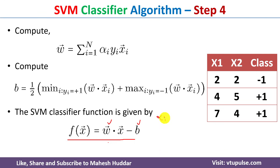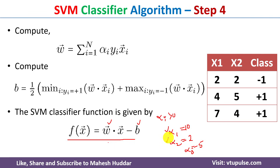An input vector is called a support vector if its corresponding alpha_i is greater than 0. For example, if alpha1 = 10, alpha2 = 2, and alpha3 = -5, then only x1 and x2 are support vectors. We do not consider x3 since alpha3 is not greater than 0. Only x1 and x2 are used to calculate the hyperplane equation.